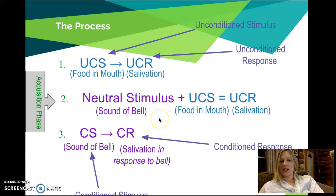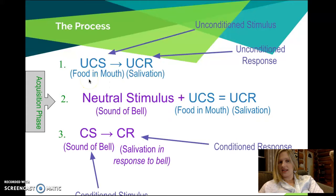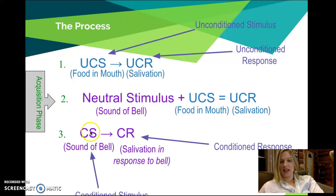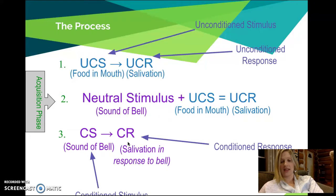We're going to be identifying from a bunch of real-life examples what the UCS, UCR, CS, and CR are. Always remember: the UCS is the unlearned thing creating the response; the UCR is the unlearned response; the CS begins as a neutral stimulus but later evokes a response. In Pavlov's classic work, the bell became the CS because it elicited salivation as the conclusion of the conditioning.